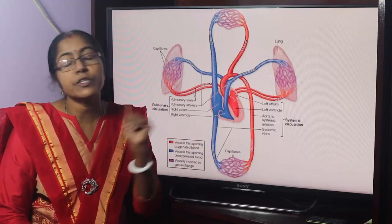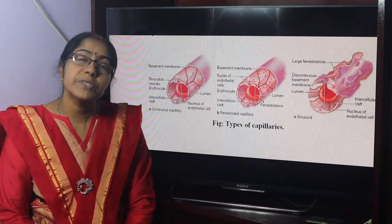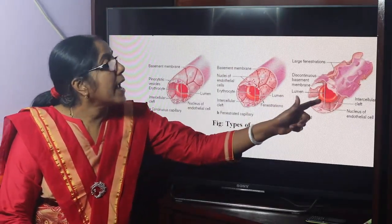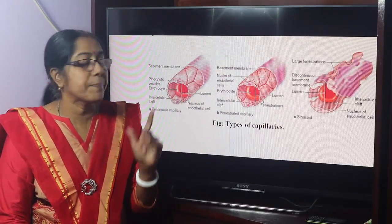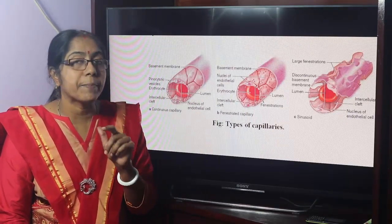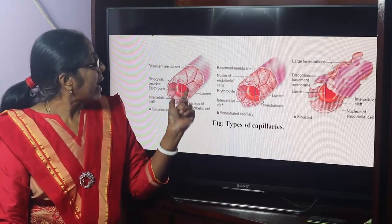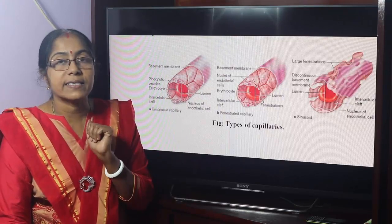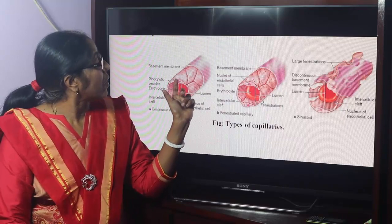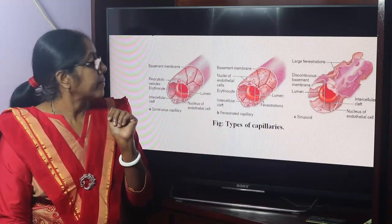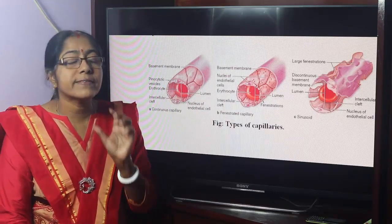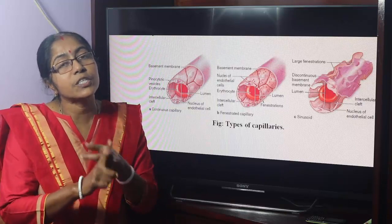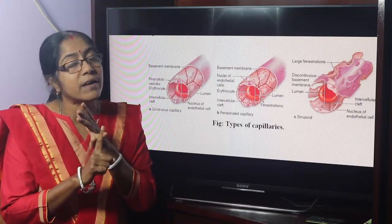Types of capillaries. Capillaries are of three types: continuous capillary, fenestrated capillary, and discontinuous or sinusoidal capillary. In the continuous capillary, endothelial cells are connected with each other by well-developed tight junctions, and endothelial cells rest on a complete basement membrane. Location: continuous capillaries are found in the four basic tissues — epithelial tissue, muscular tissue, connective tissue, and nervous tissue.